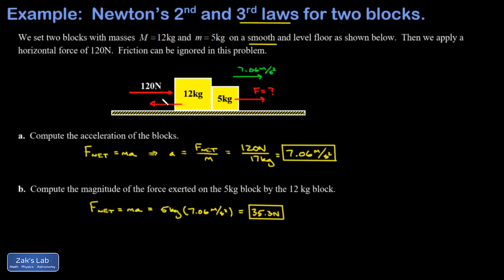Opposite in direction, but having the same magnitude of 35.3. So that's a common follow-up question I could ask: How hard does the 5-kilogram block push on the 12? And the answer is 35.3 newtons.